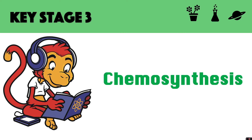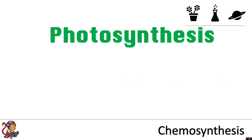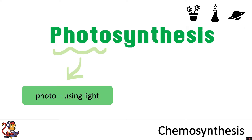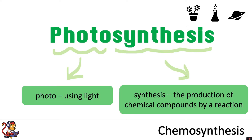Let's start this video on chemosynthesis by first recognising it sounds quite similar to a word you may have studied before, which is photosynthesis. When we broke down the word photosynthesis, it meant using light to produce chemical compounds by a reaction.